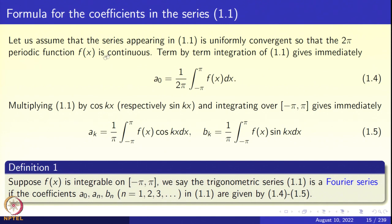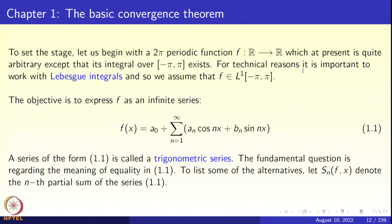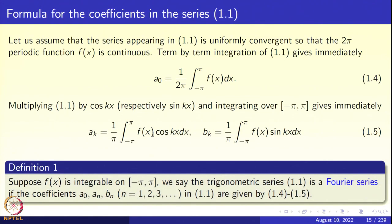We want to write f(x) as the series 1.1: a₀ + a₁cos(x) + b₁sin(x) + a₂cos(2x) + b₂sin(2x) + ..., that is a₀ + ∑(n=1 to ∞)[aₙcos(nx) + bₙsin(nx)]. Doing a term-by-term integration of 1.1 from -π to π, integrating cos(nx) and sin(nx) gives zero, leaving ∫f(x)dx = 2π·a₀. We immediately get a₀ = (1/2π)∫₋π^π f(x)dx (equation 1.4).